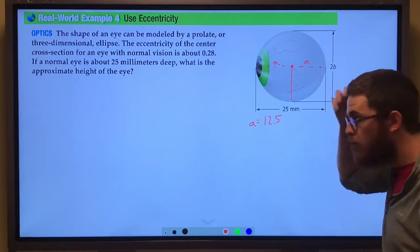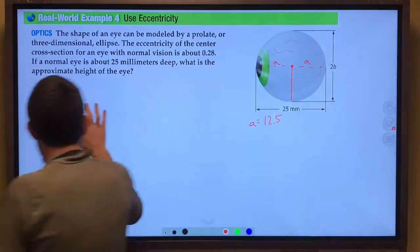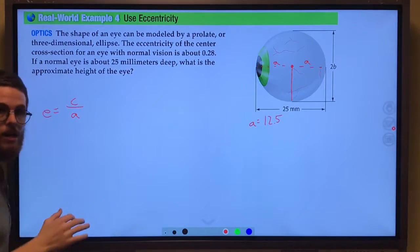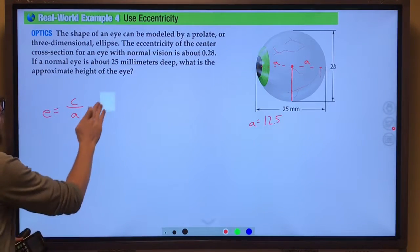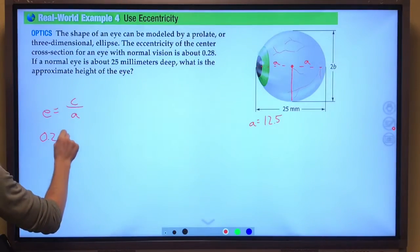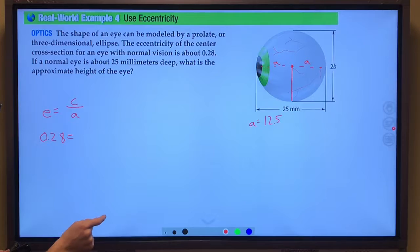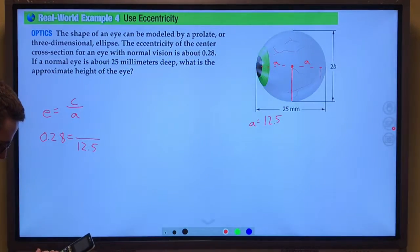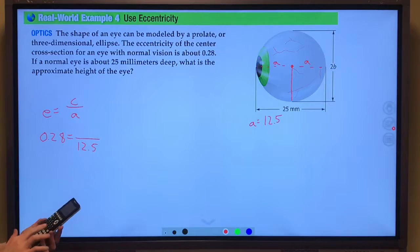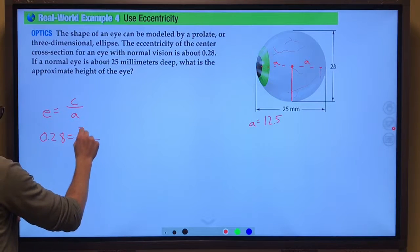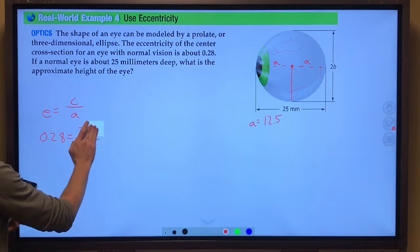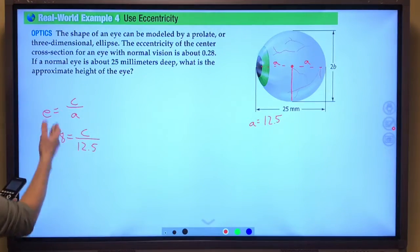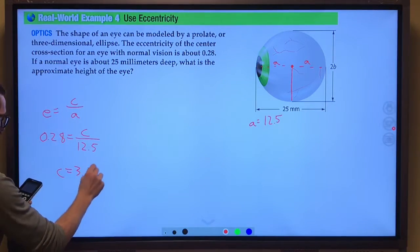So a would be 12 and a half millimeters. Well, if the eccentricity is c over a, and we know the eccentricity is 0.28, we're looking for the c value. We know the a value is 12 and a half. 12 and a half times 0.28 gives a c value, which would have to be about 3.5. We can do a little multiply by 12 and a half. C comes out to be 3.5.